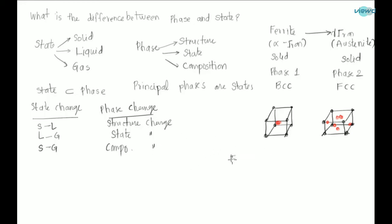On adding carbon to ferrite, it converts to cementite. Cementite consists of 6.67% carbon. Ferrite has BCC structure and cementite has orthorhombic structure. Both have different structures. This is phase one, this is phase two.